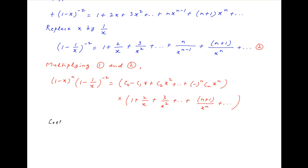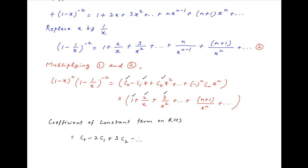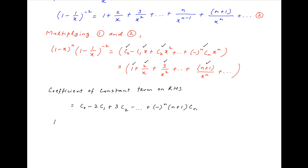On the right hand side, the coefficient of the constant term is obtained by multiplying the first term in the first bracket with the first term in the second bracket, resulting in c0, plus multiplying corresponding terms to get +3c2, and so on. The last term is (-1)^n * (n+1) * cn.